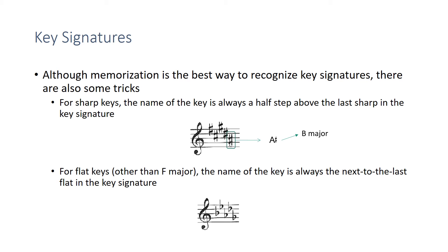For flat keys, other than F major, the name of the key is always going to be the next to the last flat in the key signature. So if we look at this key signature, the next to the last one is D flat, and so the key is D flat major. This will work for all of the sharp and flat key signatures. C major you should be able to recognize, and F major has a single flat, so we can't identify the next to the last one. F major just has one flat, which is B flat.